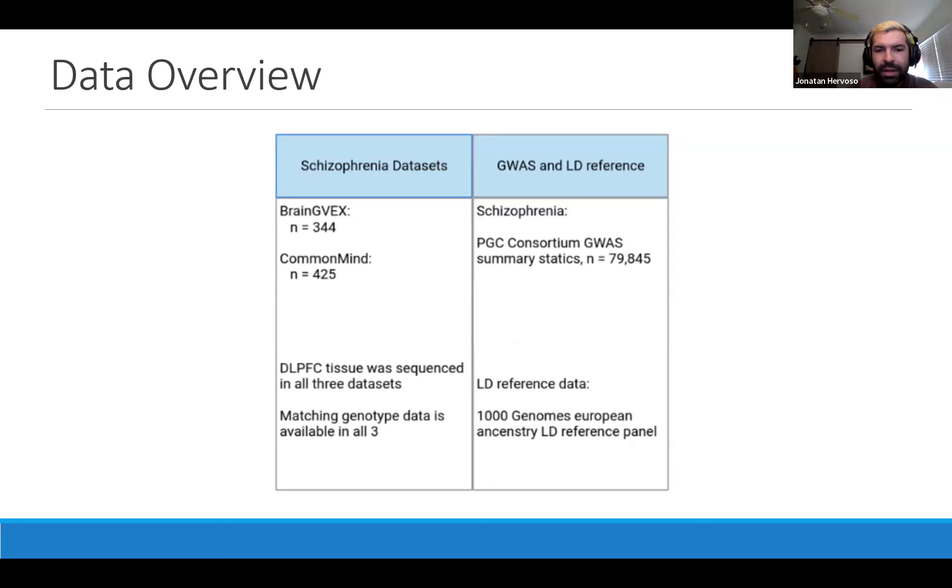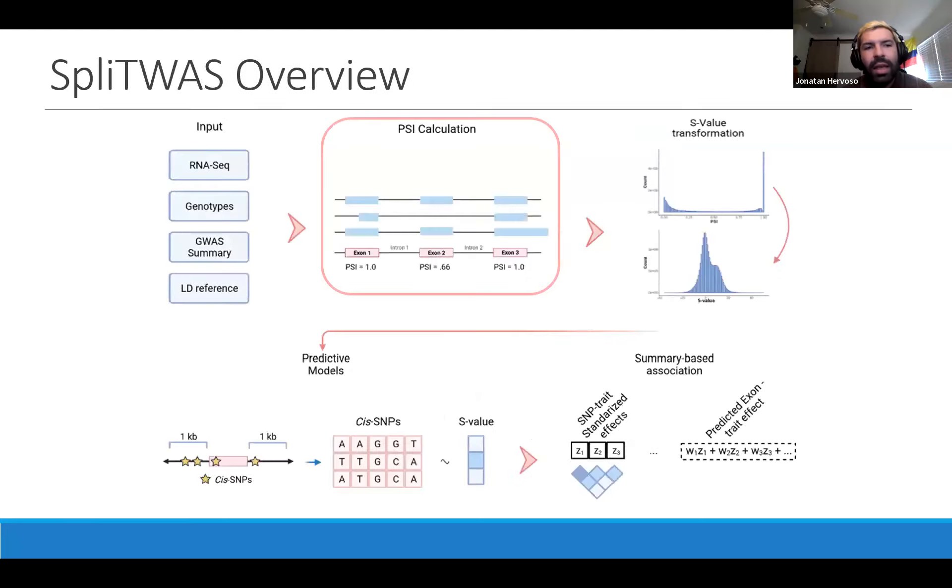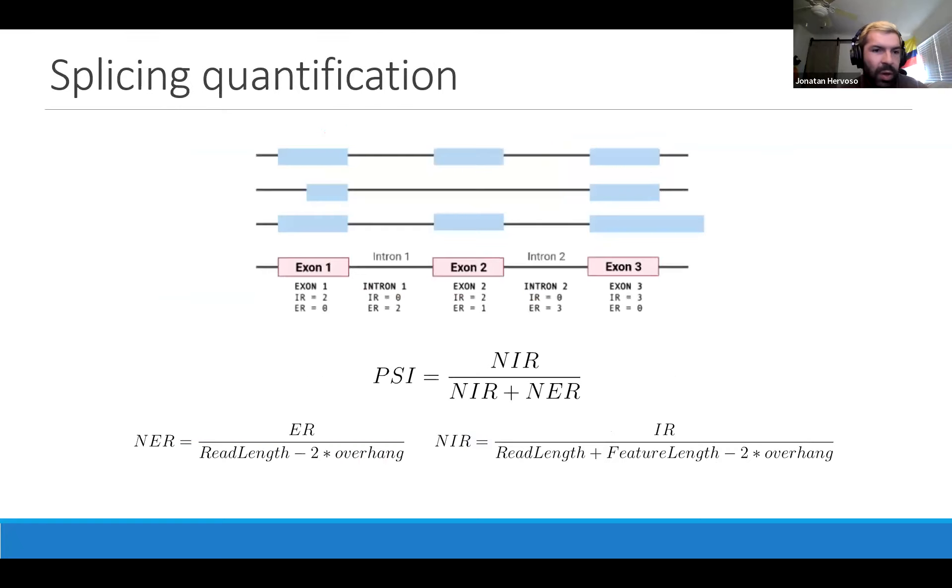With this, the first step we have is quantifying splicing. This is something that's been missing between the RNA biology field and the genetics field. Genetics has been looking at splicing in a multitude of ways while the RNA biology field has concentrated on looking at it through the lens of PSI.